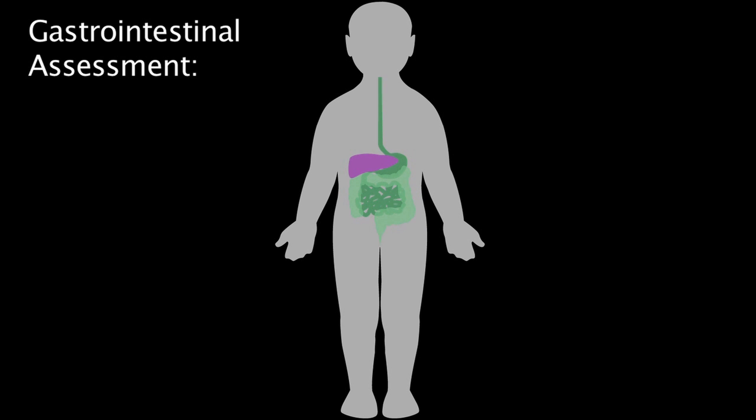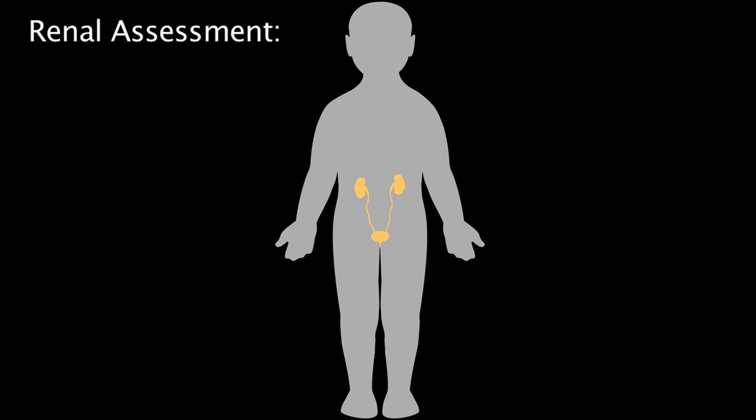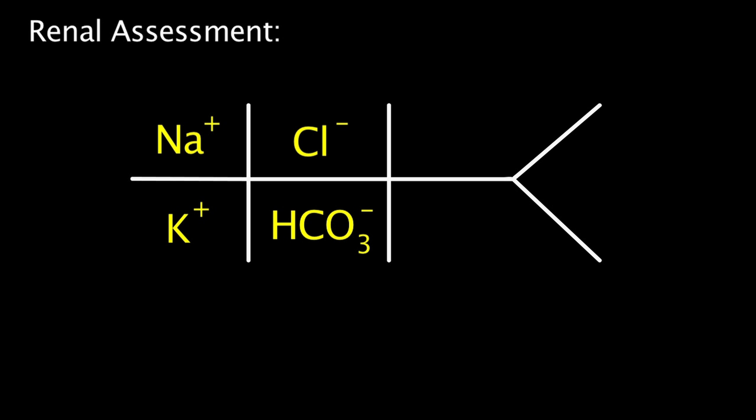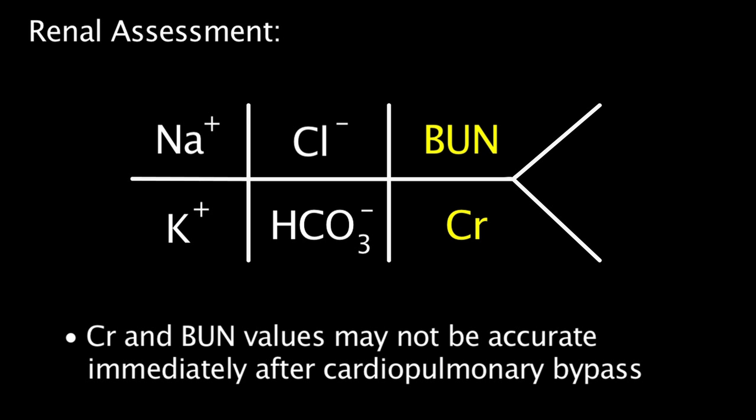Liver enlargement may be a sign of right heart failure. Urine output should be assessed as a measure of renal perfusion. The patient should also have serum electrolytes, creatinine, and blood urea nitrogen values assessed, although creatinine and BUN values may not be as accurate initially, immediately after cardiopulmonary bypass.